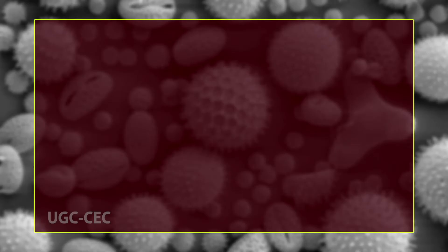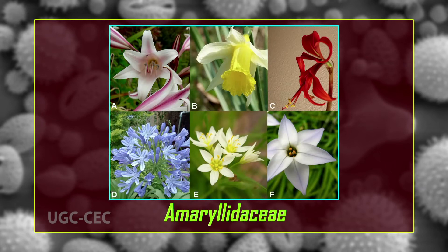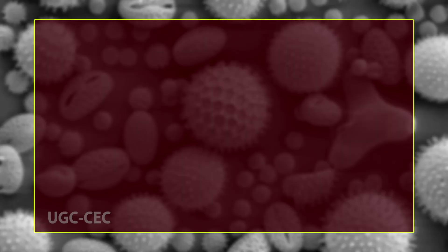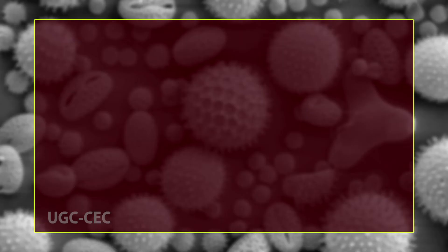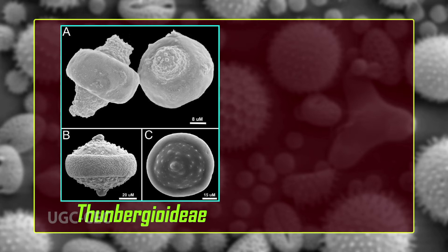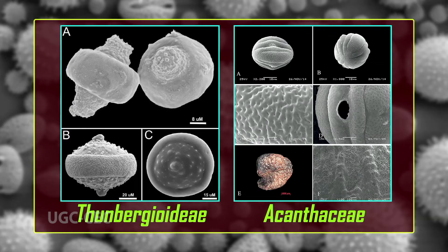MSU-exine and thin intine is present in angiosperm pollen, but in certain taxa among monocots — for example, Amaryllidaceae, Musaceae, and Zingiberaceae — the exine is highly reduced and intine is well-developed. In Lamiaceae, two-nucleate pollen grains are generally tricolpate while three-nucleate pollen grains are hexacolpate. Palynological studies suggest that Thunbergioideae of family Acanthaceae should be given family status.